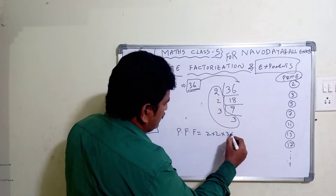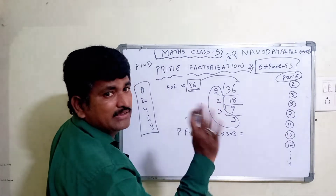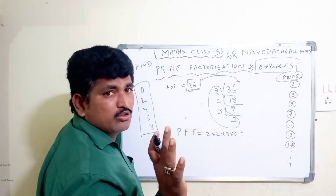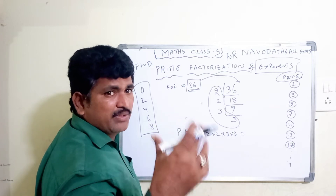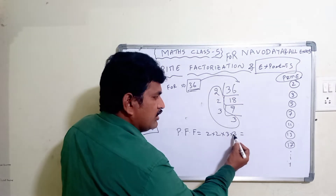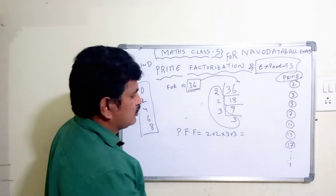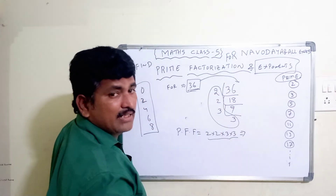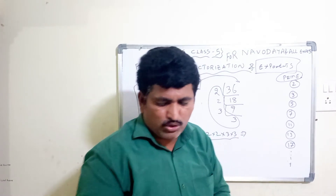Two twos are four, four threes are twelve, twelve threes are thirty-six. Yes, so this confirms the prime factorization. Multiply them back together and it's correct. So the prime factorization is verified.